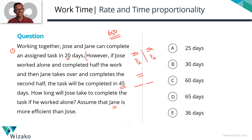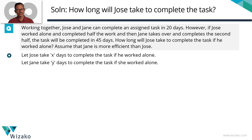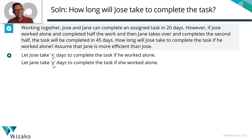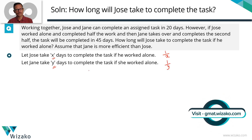Let's assign variables. Joe alone takes X days to finish the task, and Jane alone takes Y days to finish the task. If Joe takes X days to finish the task, in a day Joe will finish 1/X of the task. Jane takes Y days, so in a day Jane will finish 1/Y of the task.